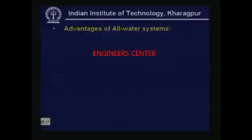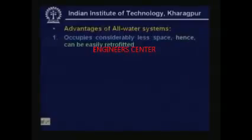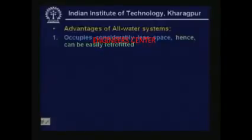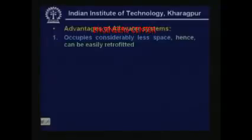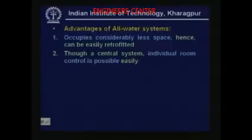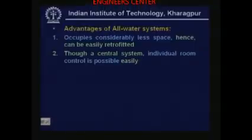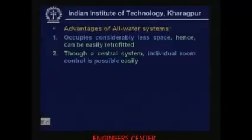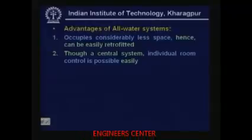Now let us look at advantages of all water systems. All water systems occupy considerably less space because there are no air ducts — only water pipelines, which are very small due to water's high density, resulting in much smaller volumetric flow rates for a given capacity. Hence the required space is very much less, making them easy to use in retrofitting existing buildings. These are central systems, but they also offer individual room control — for example, in a room where cooling is not required, you can simply switch off the fan of the fan coil unit.